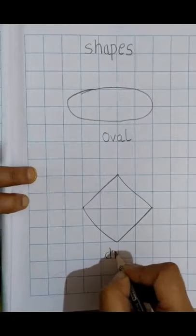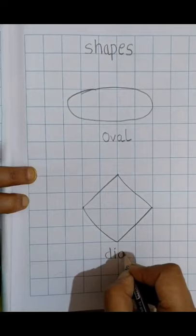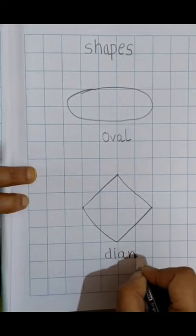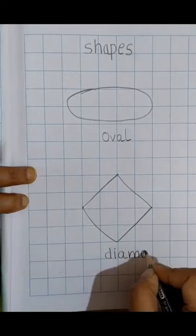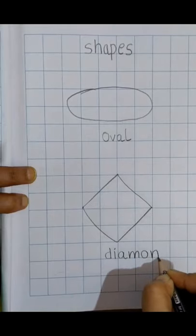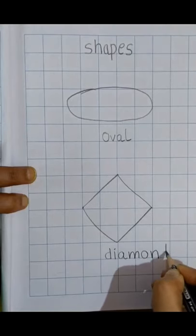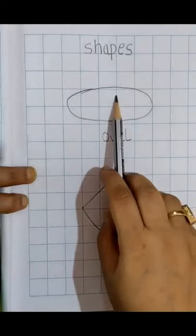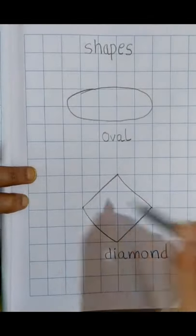D, I, A, M, O, N, and D. Yes, so this is an oval and this is a diamond. Right children?